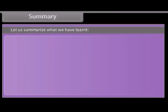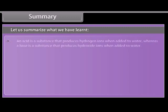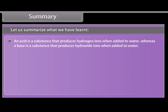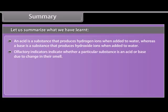Summary. Let us summarize what we have learnt. An acid is a substance that produces hydrogen ions when added to water whereas a base is a substance that produces hydroxide ions when added to water. Olfactory indicators indicate whether a particular substance is an acid or base due to change in their smell. Every liquid you see will probably have either acidic or basic traits.